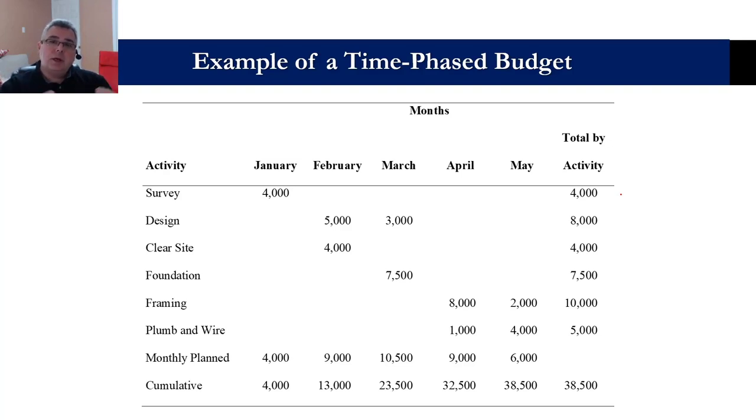So everything that we do, and that cost baseline or time phase budget is the main resource or input for monitoring and controlling the project. Because it consolidates time and the budget. That's a beautiful time phase budget. And everything that we'll be doing here in terms of monitoring and controlling will be collecting information from the time phase budget. Because here, let's take the one activity here, design. You know that design will be executed February, March, and you have $5,000 of expenses in February, $3,000 in March.